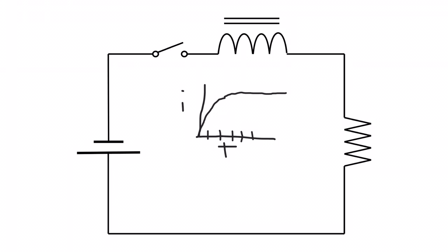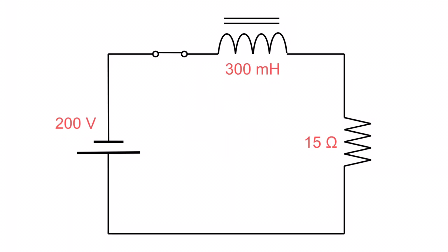Let's throw some values at this. I've given the battery 200 volts, the inductor 300 millihenries, and the resistor 15 ohms. I've now closed this switch, so we're going to walk through the math — we'll see what happens to the current as it rises, the volt drops across the inductor and resistor, and we'll talk about the energy stored.